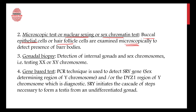We look to see whether a Barr body is present. The Barr body is an inactive X chromosome, and it is present only in females. So if a Barr body is seen during the nuclear sexing process, that means the body is of a female. Certain exceptional cases exist as well.